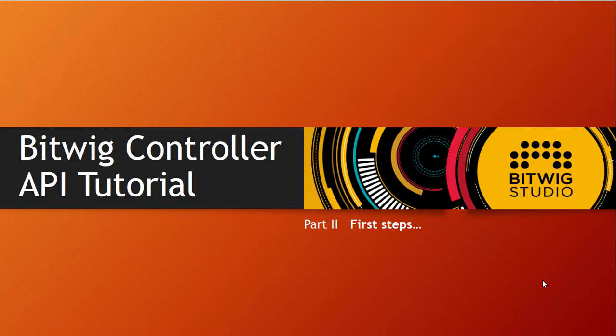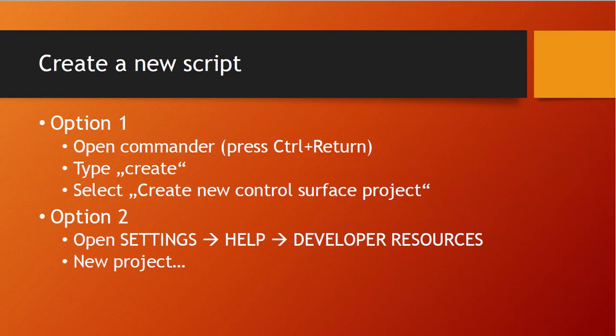In this second part I promised we would dive into real coding, but actually we can generate code, which is even better because we don't have to write it. Bitwig has a feature to get you started by generating a framework for your script or extension. You have two options: use the Commander, or look in the developer resources area we used in the first part, where you can create a new project.